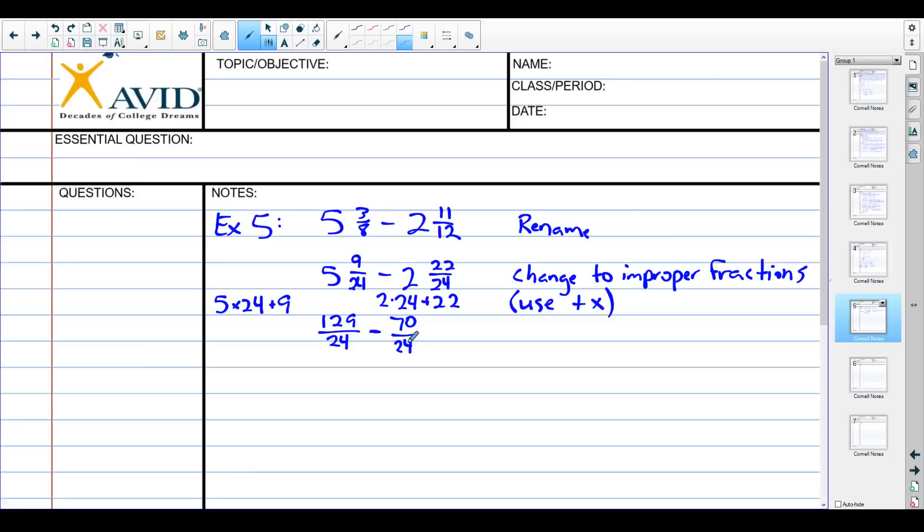Now we could use KFC here, but we actually don't have to, because none of the numbers are negative. This is just a standard regular old subtraction problem. So 129 minus 70 is just 59, and it's still over 24. So we just subtracted here. So now this is not wrong, but generally you don't want to leave your answers as improper fractions until you get to algebra. So we're going to change it back to mixed number.